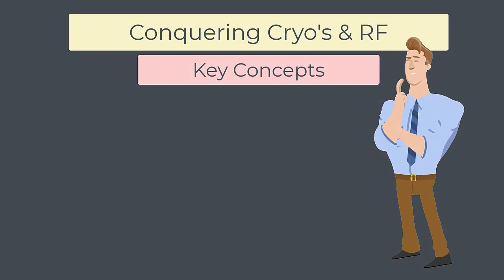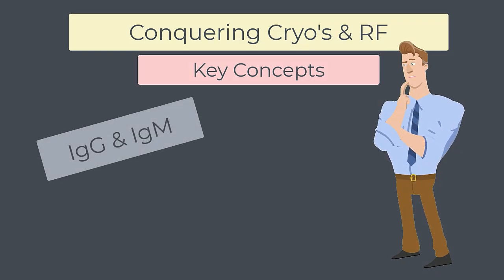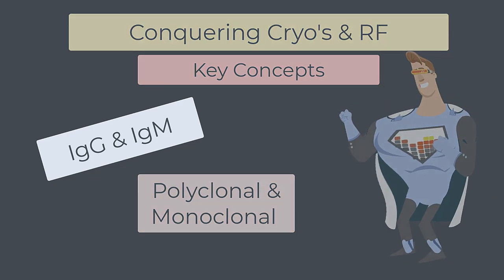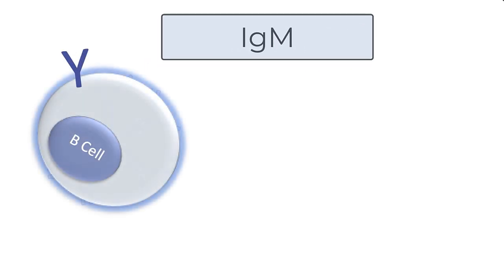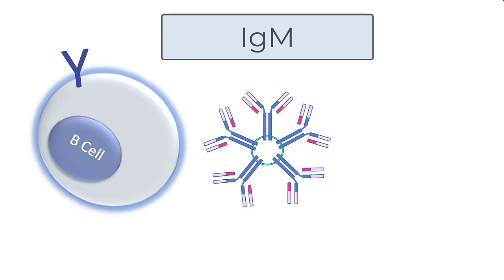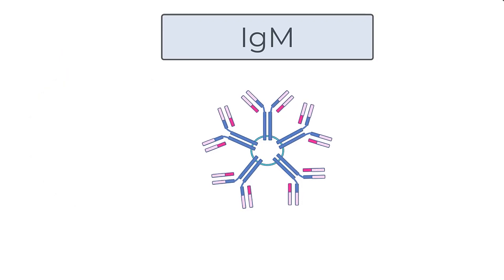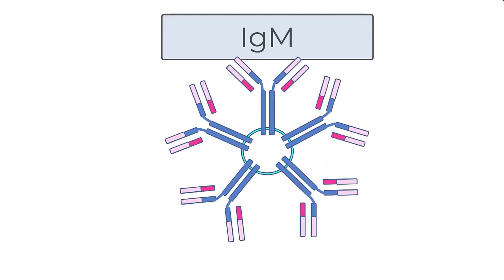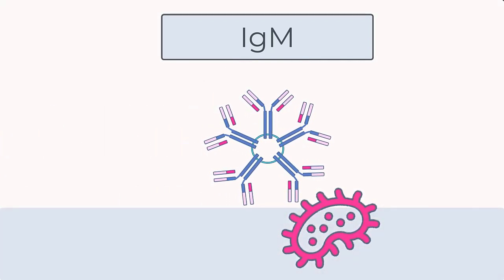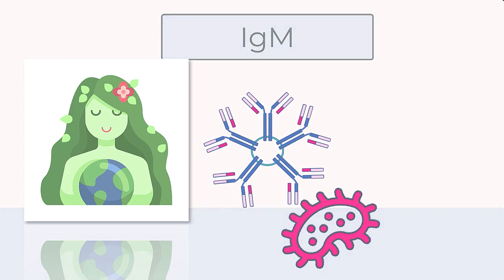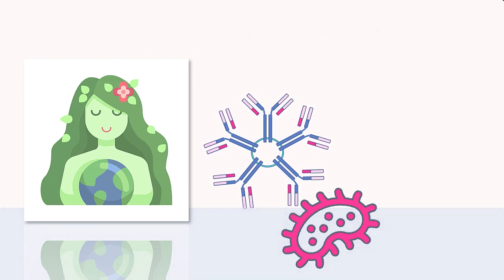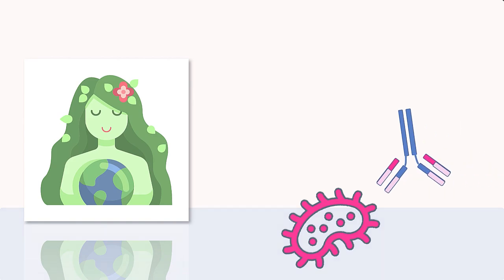All you need to understand cryoglobulinemia and rheumatoid factor is the difference between IgG and IgM antibodies and the meaning of the terms polyclonal and monoclonal. IgM is the first on the scene antibody produced directly by B cells. IgM is a big antibody — a big pentamer structure — so it has lots of binding sites which will stick to a particular antigen imperfectly. Being first on the scene, the immune system wasn't aiming for perfect. It just throws IgM out there to tackle the infection best it can, whilst it works on creating a better, more specific antigen binding site, usually in the form of IgG antibodies.